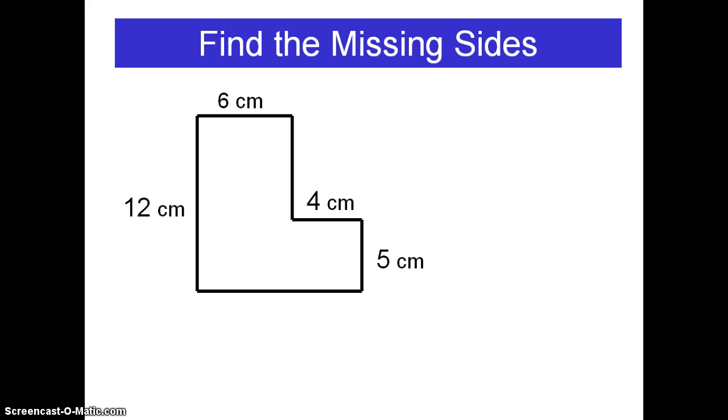The first missing side that we will find in this polygon will be the bottom. If I take a look at the other two horizontal measurements in this shape, I am going to slide those down to align them by the green segment.